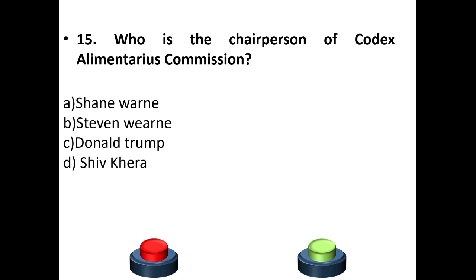Fifteenth question: Who is the chairperson of the Codex Alimentarius Commission? A) Chain One, B) Steven Wayne, C) Donald Trump, D) Shiv Khaira. The answer is option B — Steven Wayne. Thank you, all the best for your exams. If you like this channel, please share and subscribe, and don't forget to click the bell button to get notifications.